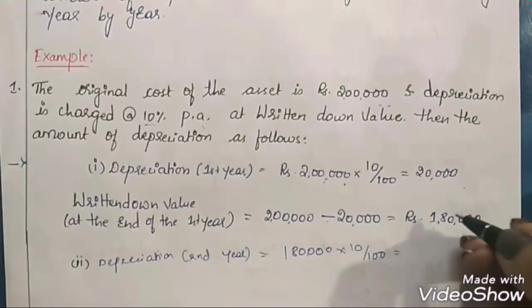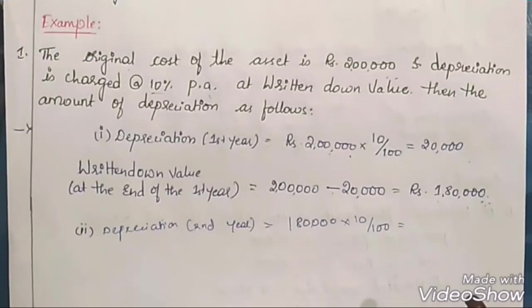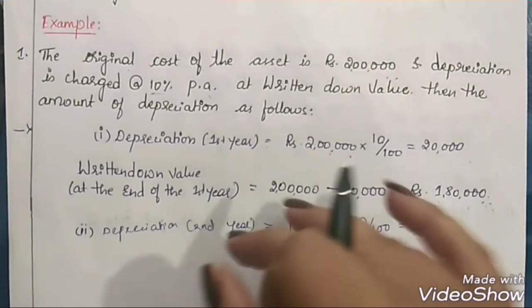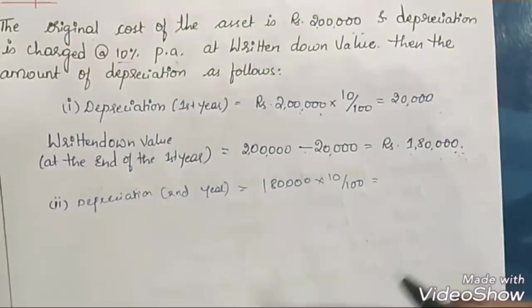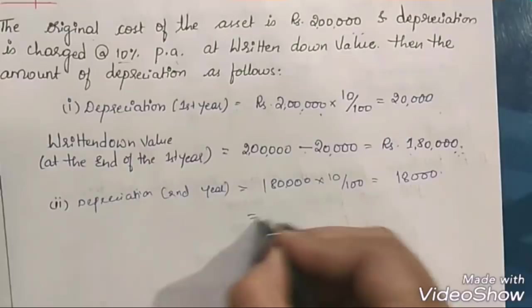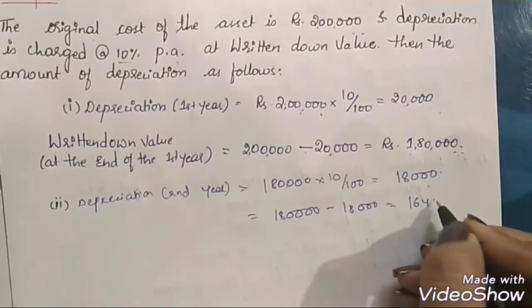In the second year, depreciation is 10% on the book value of Rs. 1 lakh 80,000 — not on the original cost. That gives Rs. 18,000. Deducting Rs. 18,000 from Rs. 1 lakh 80,000 gives a book value of Rs. 1 lakh 62,000 at the end of the second year.